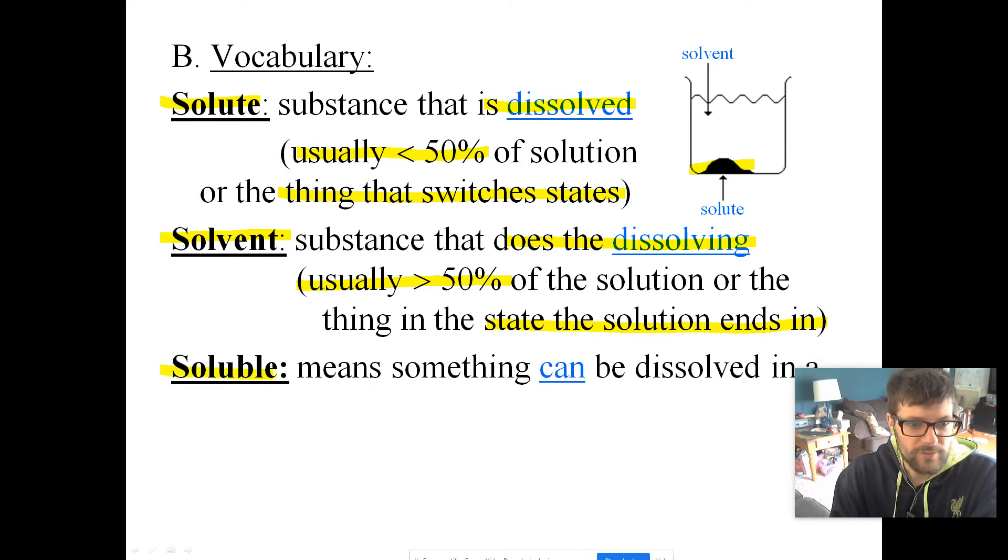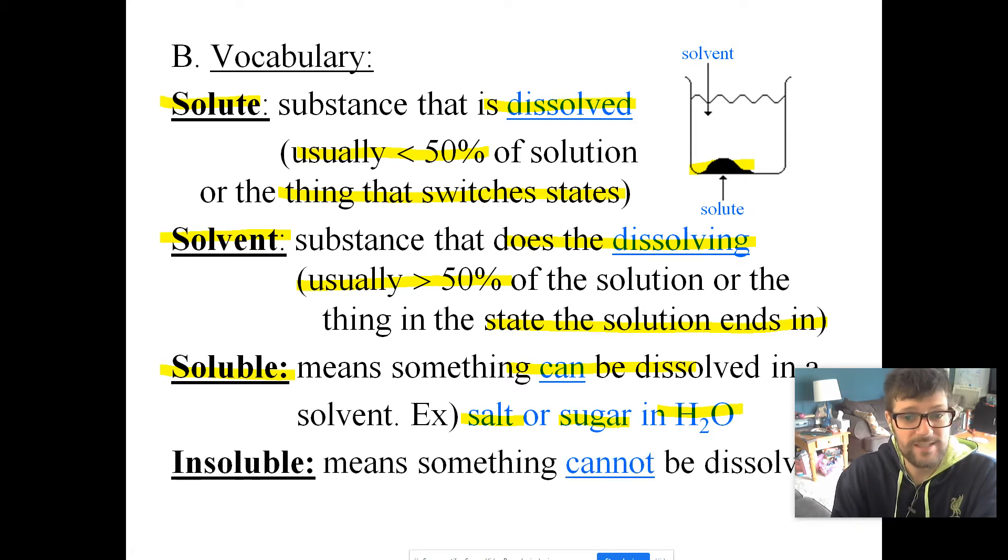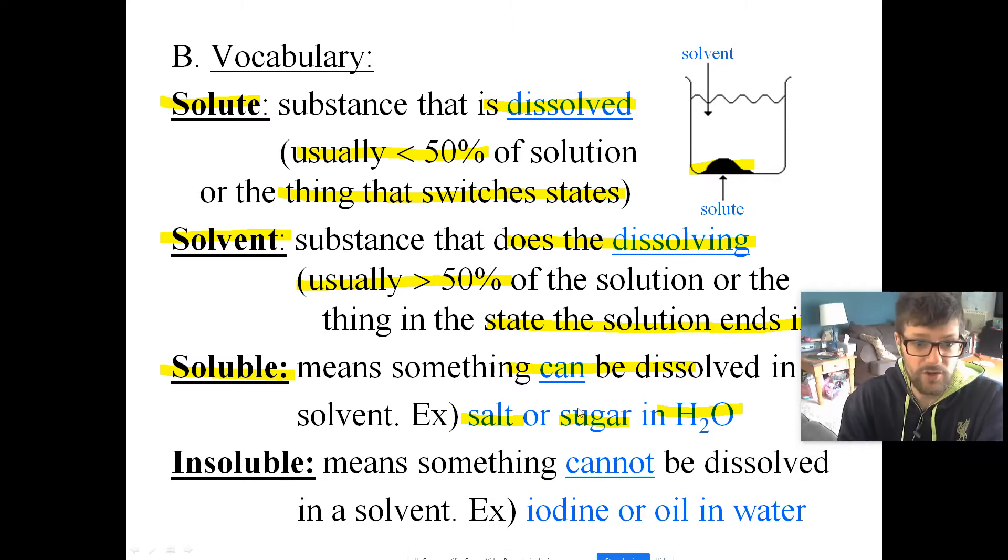We also have the term soluble, which just means that something can be dissolved in a solution. We would say salt is soluble in water, which means that you can make a solution of salt and water. Sugar is soluble in water. Or we could say something is insoluble, which means it cannot be dissolved in a solvent. For example, oil is insoluble in water. You can't dissolve oil in water.